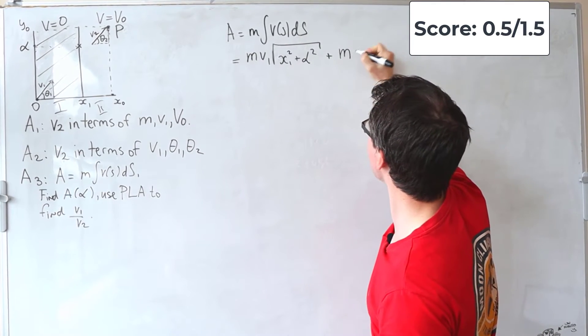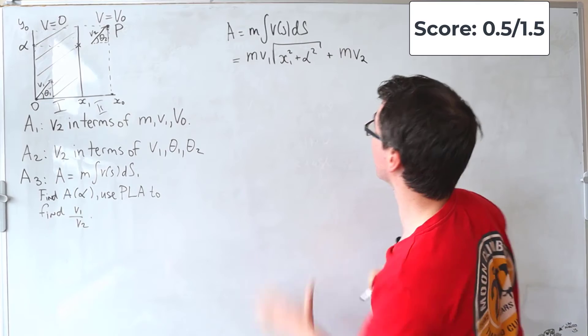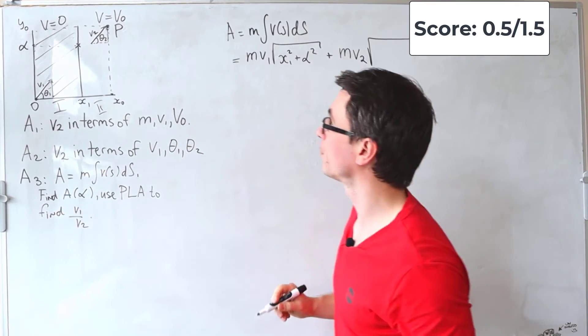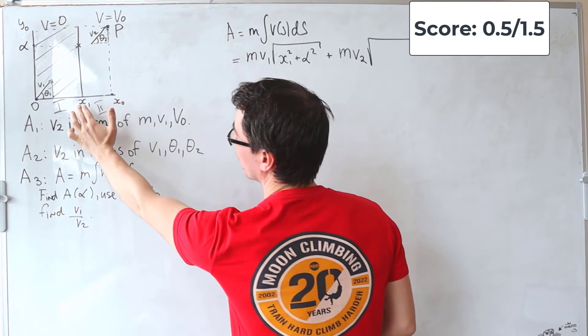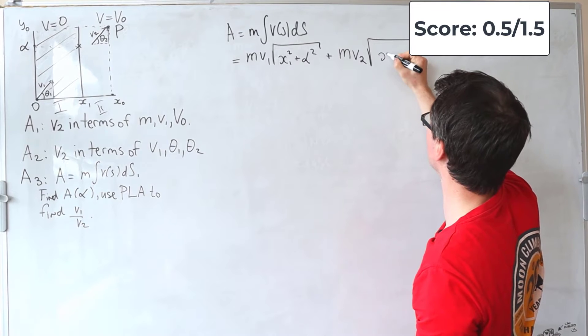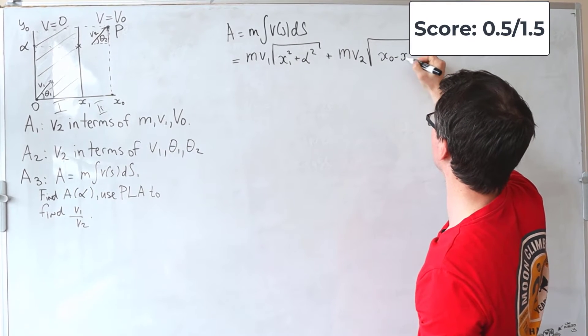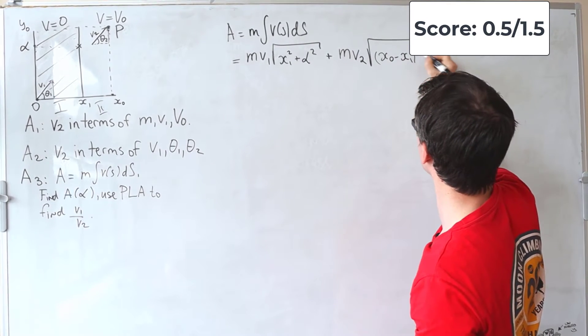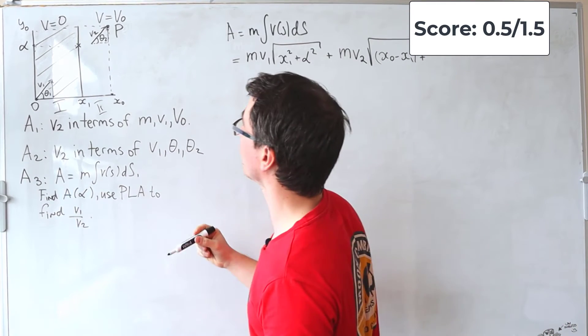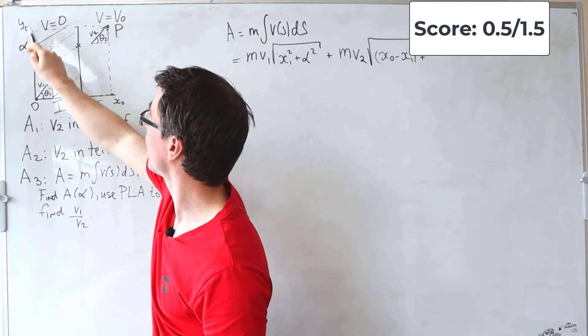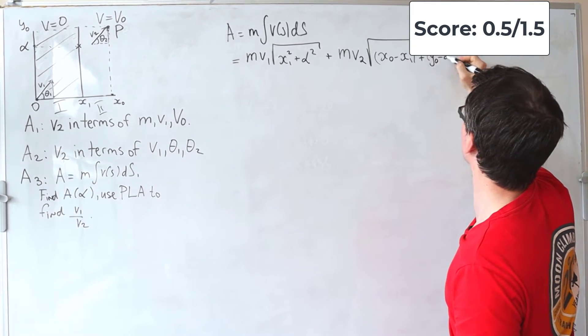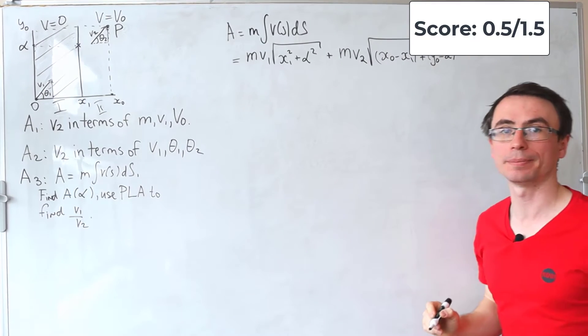For region 2, we're going to add M multiplied by V2 and then the square root of, well, we just need to take away x0 minus x1. This will be the horizontal distance traveled in it. So, it'll be x0 take away x1. That will be squared plus the distance in the y direction has been traveled, which will be given by y0, take away alpha squared.